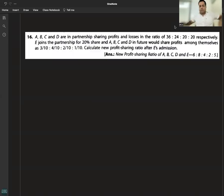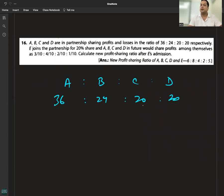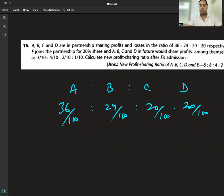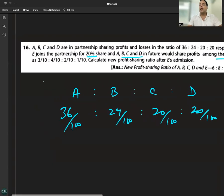Question number 16: A, B, C, D are in partnership sharing profits and losses in the ratio of 36:24:20:20. E joins the partnership for 20% share, and A, B, C, D in future will share the profits among themselves in the ratio 3:4:2:1.